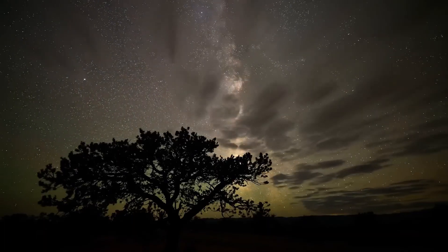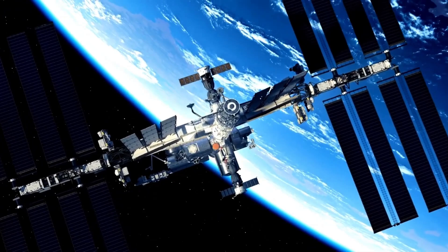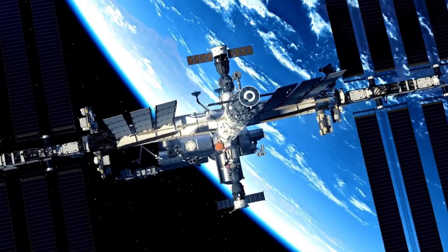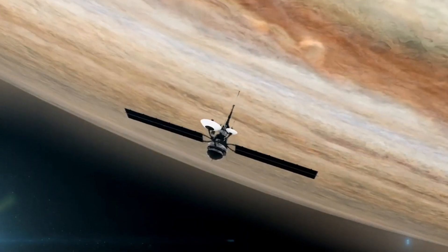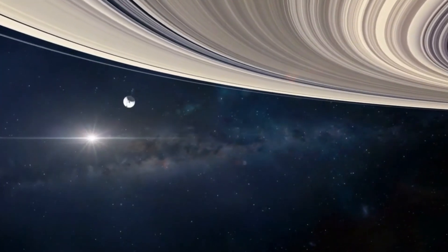But today, Voyager 1 has just sent back information that defies everything we thought we knew. At the edge of our solar system, in an area known as the heliopause, Voyager 1 has recorded something scientists are calling an impossible discovery.